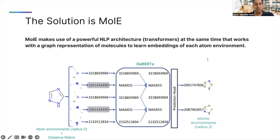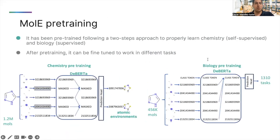This information is used to learn an embedding of atom environments of radius two, which means the central atom and all the neighboring atoms separated by no more than two bonds. We designed a pre-training strategy that consists of two steps. A self-supervised step to learn to represent chemistry, in which we learn atomic environments of radius two present in 1.2 million molecules. The second step is a supervised step to learn biology, in which Mole is trained on 456,000 molecules and 1,310 tasks, previously extracted from ChEMBL.